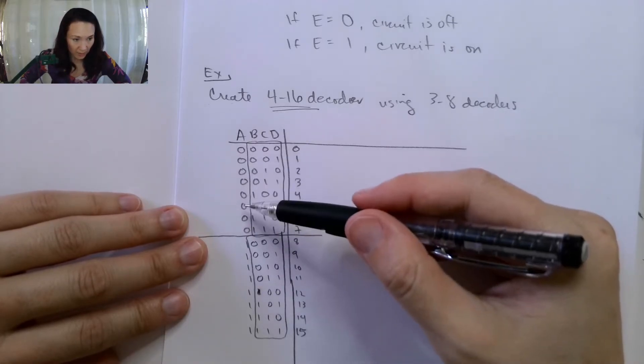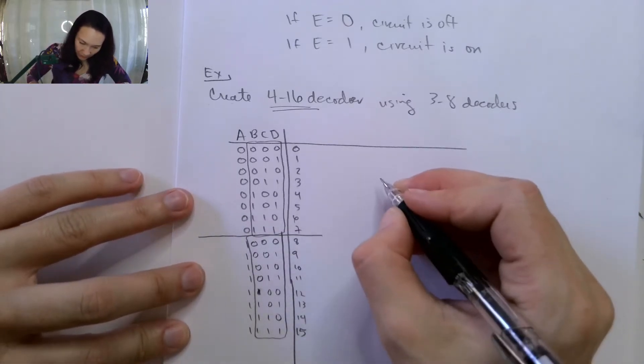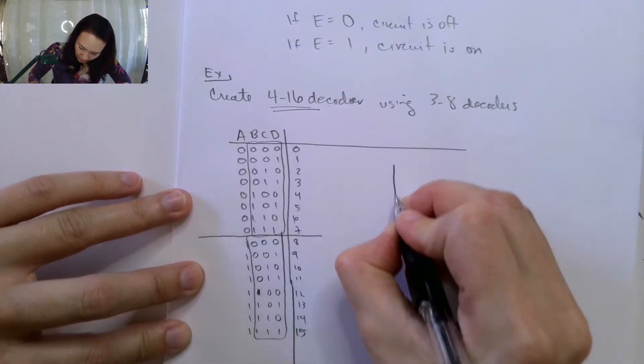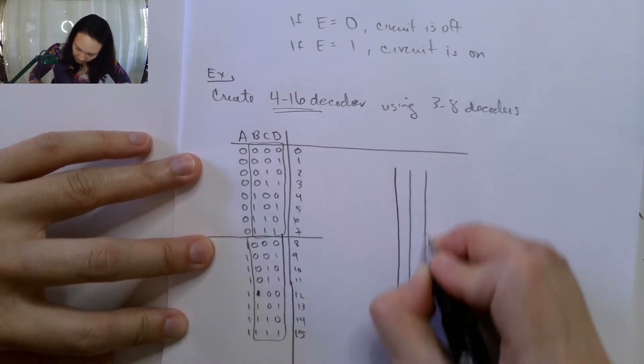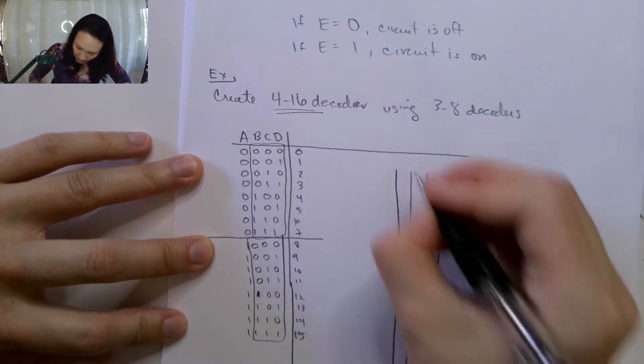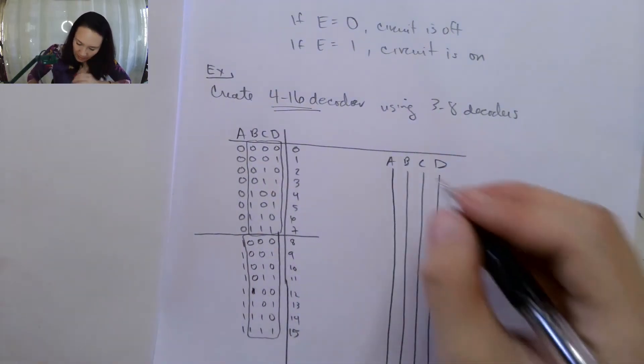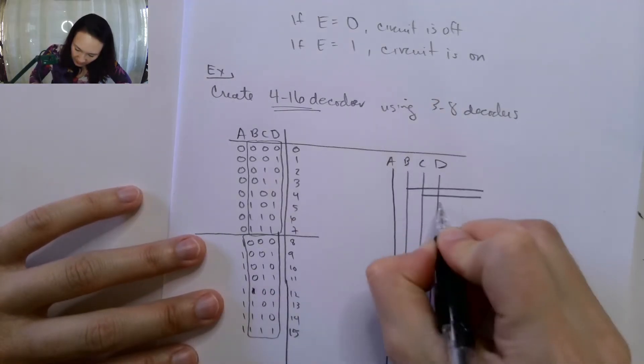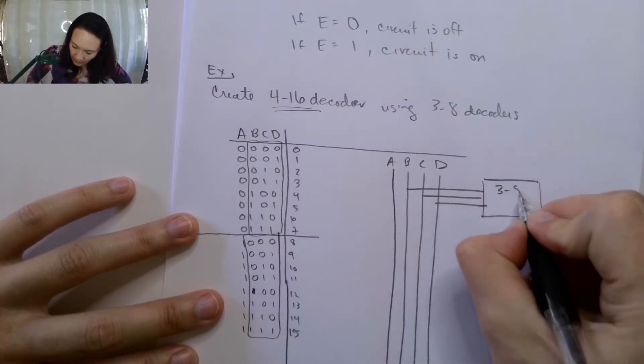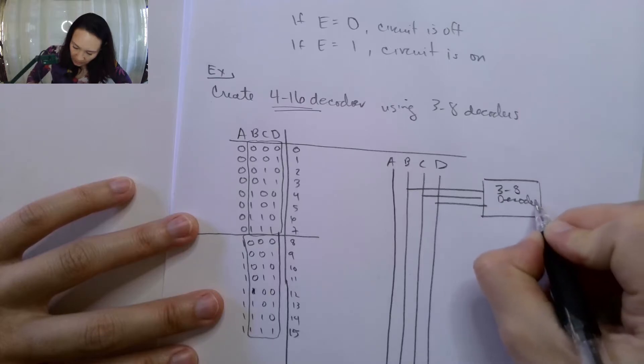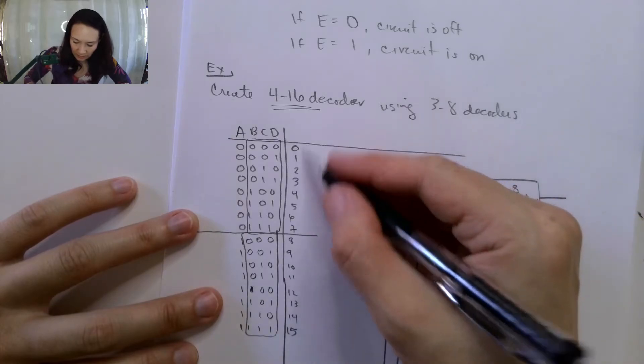So it ends up looking like this. If I have my lines here in this vertical orientation with A, B, C, D coming in as inputs, I want to take B, C, and D and pipe those as inputs to a 3-to-8-bit decoder. And then the output is going to be some decimal digits between 0 and 7.